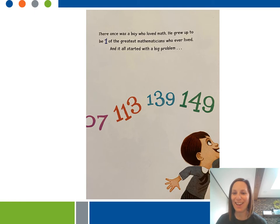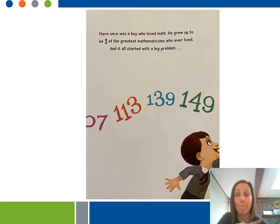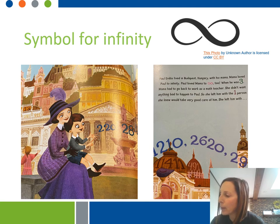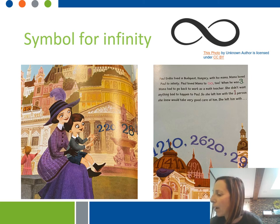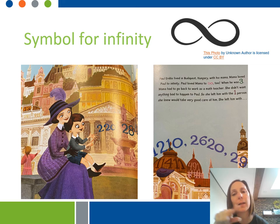Here is our first page. There once was a boy who loved math. He grew up to be one of the greatest mathematicians who ever lived. It all started with a big problem. Paul Erdős lived in Budapest, Hungary, with his mama. Mama loved Paul to infinity. Paul loved mama to infinity, too. Infinity means it goes on forever.